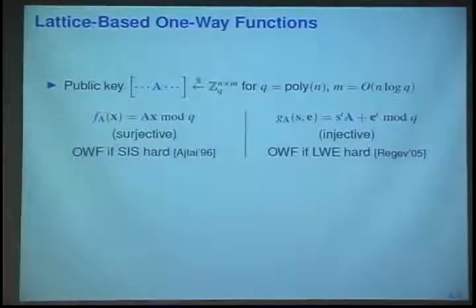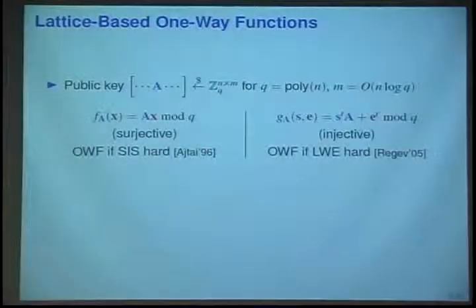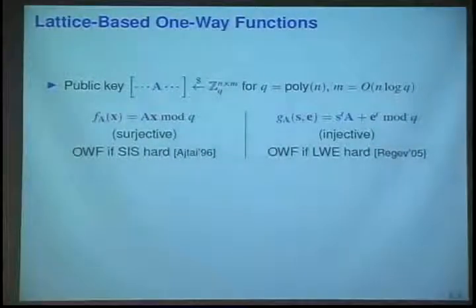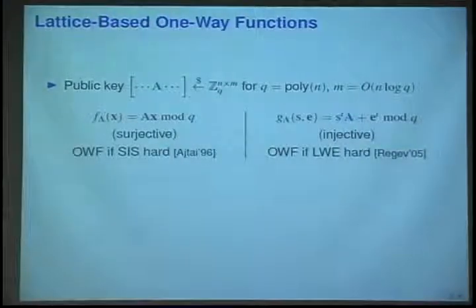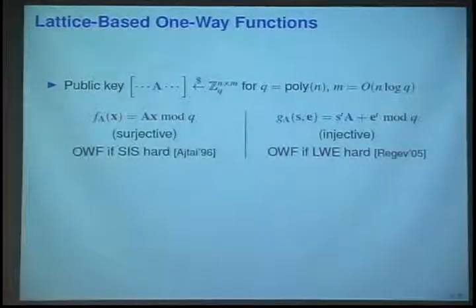We have two one-way functions that we often use in the literature. The one on the right is injective, and you just multiply A on the left by a random s, and then you add some error to the output. This is hard if the famous learning with errors problem is hard. This is one way.